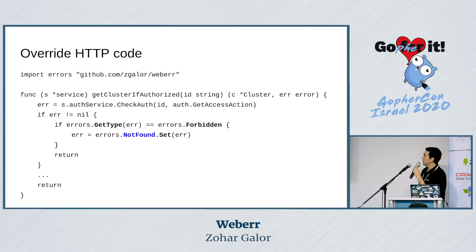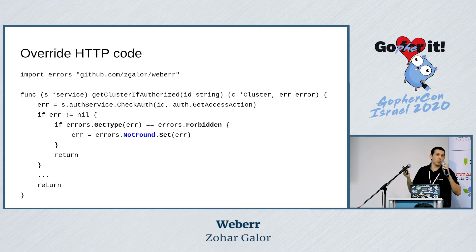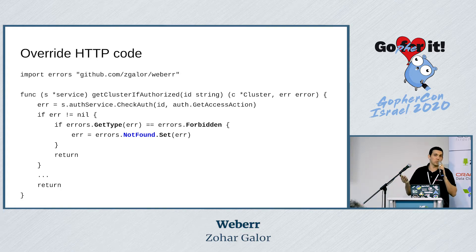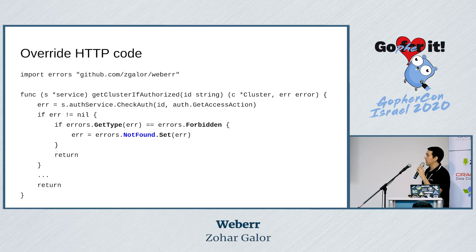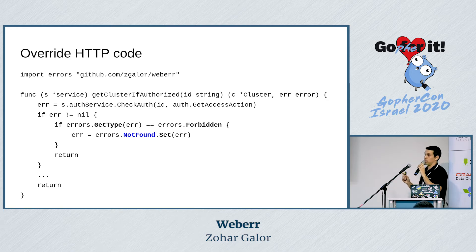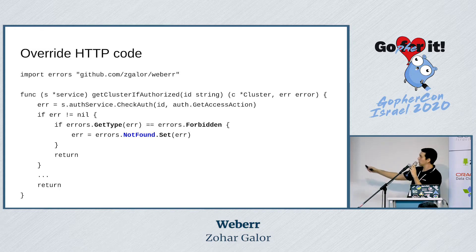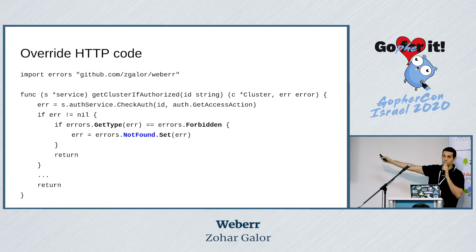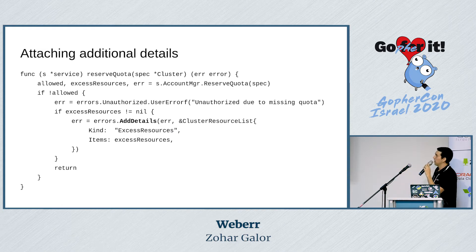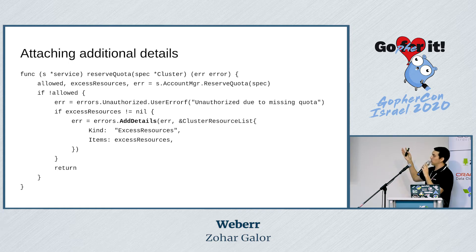In another use case, we approach an external authentication service to check if a user is authorized to access the cluster. The authentication service returns 403 Forbidden — the user is not allowed to get this cluster. Now, in my service logic, if the user is not allowed to even view the cluster, I actually don't want the user to even know the cluster exists. So I want to override the error code, and I do it with Set — setting a 'not found' error code to the error, which overrides the previous error code.